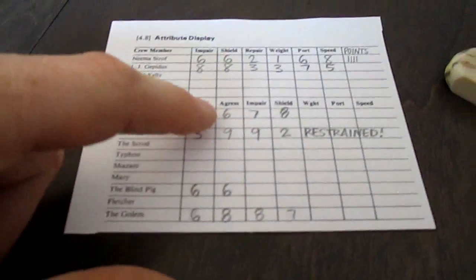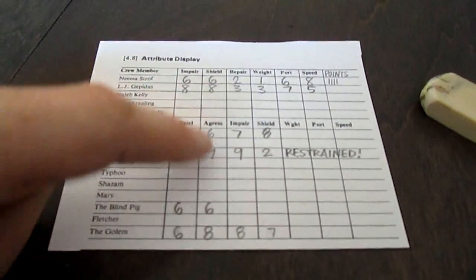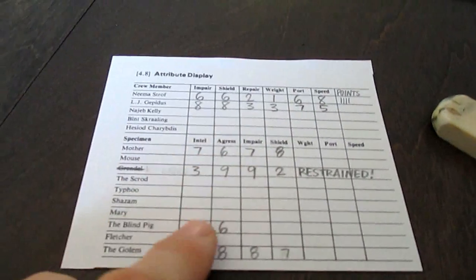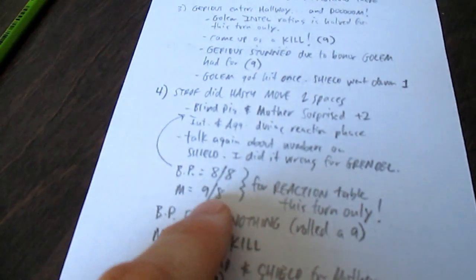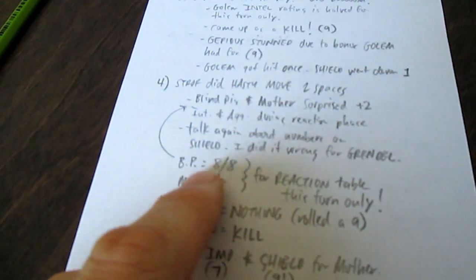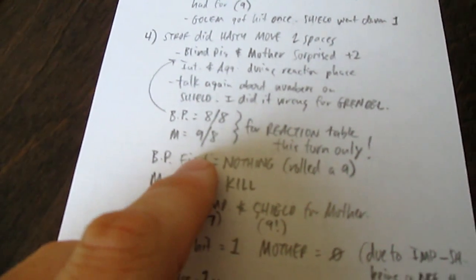Intelligence of seven for mother, intelligence of six for the blind pig, six aggression and six aggression for both of them. So we just added two to both of those for their first reaction. It brought the blind pig to eight-eight and the mother to nine-eight.